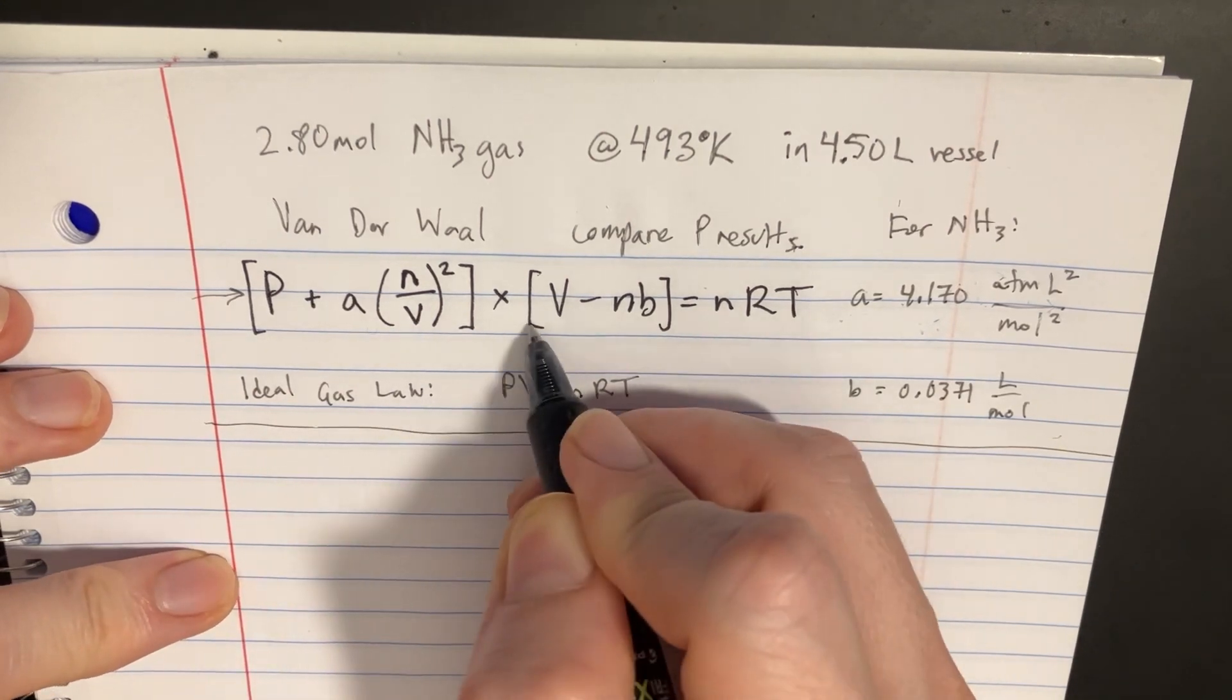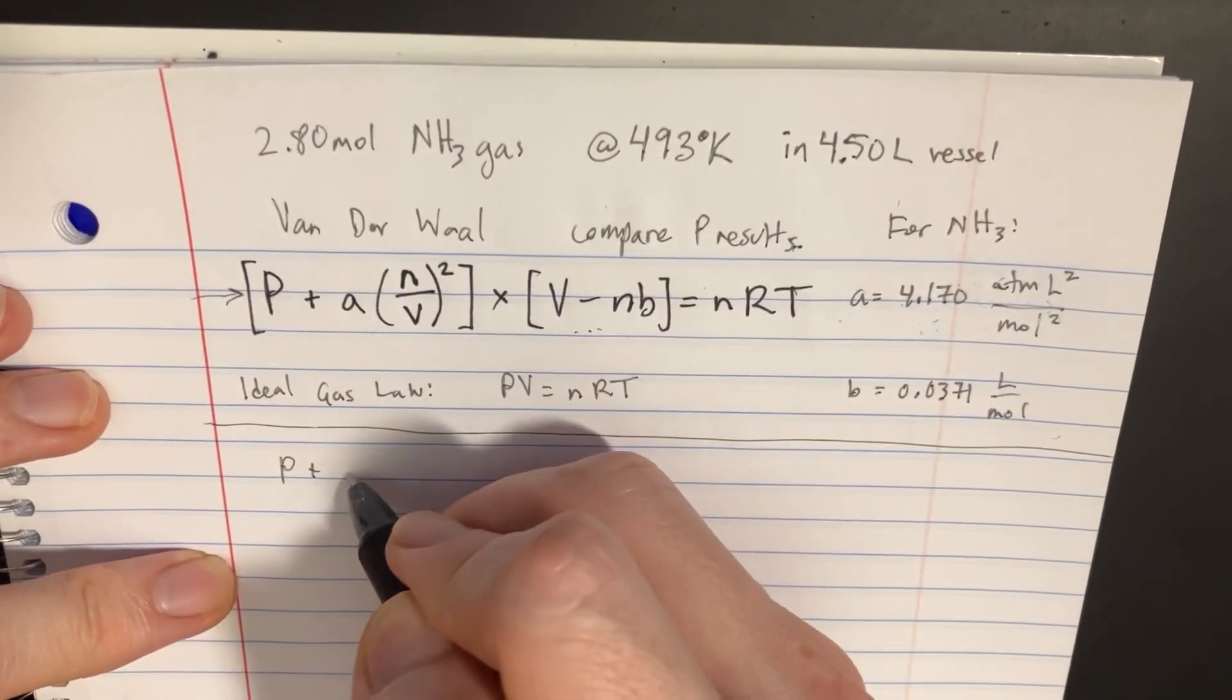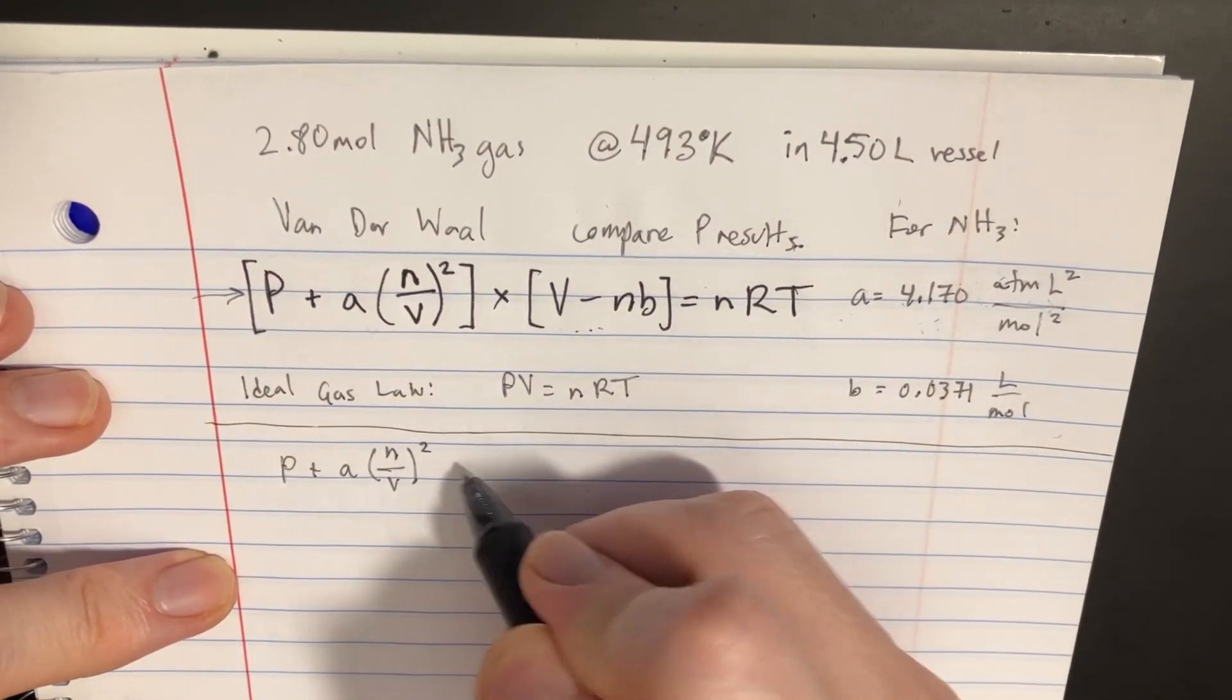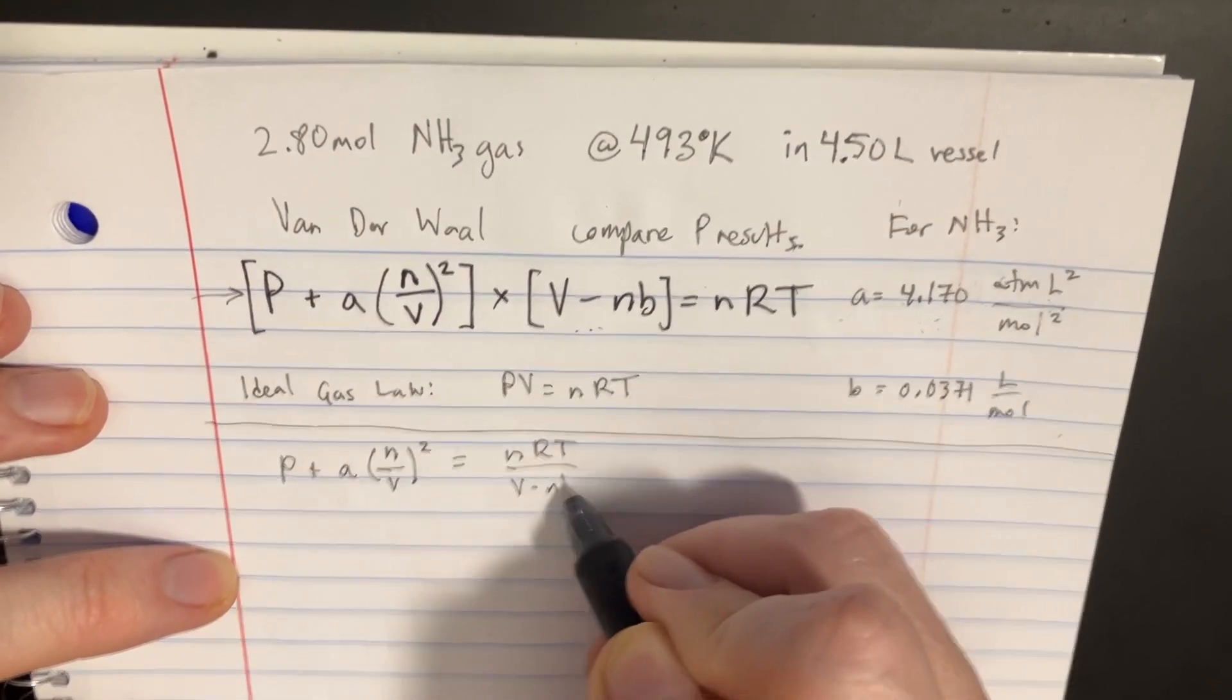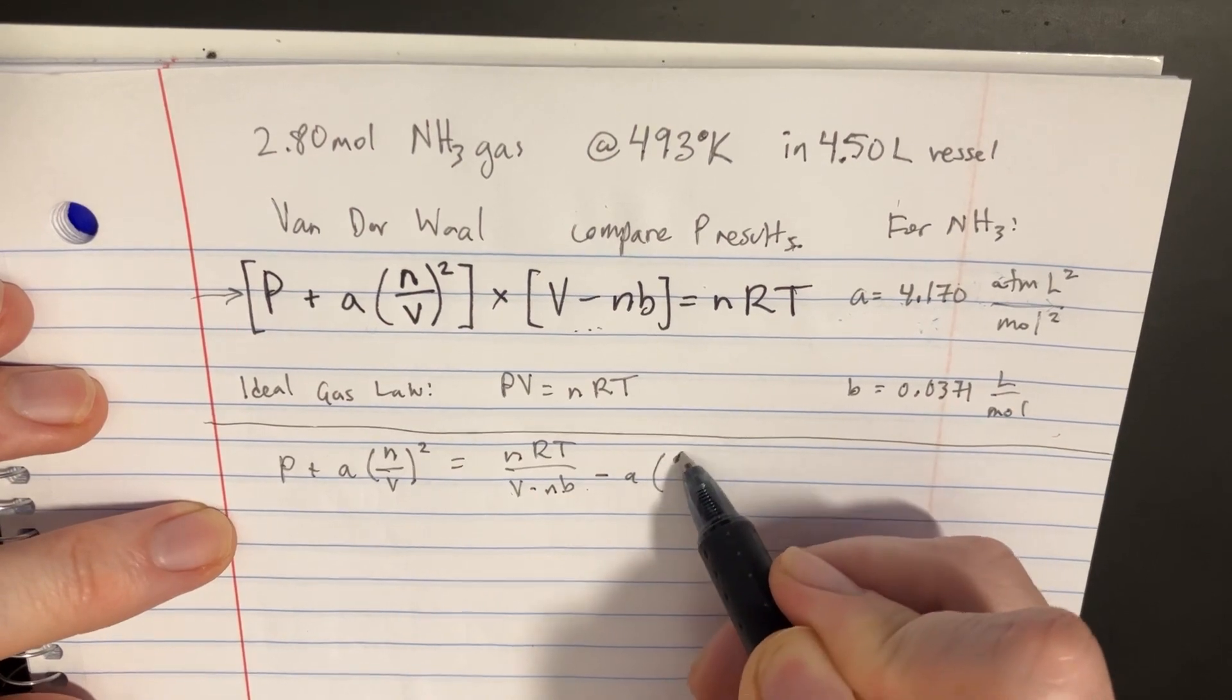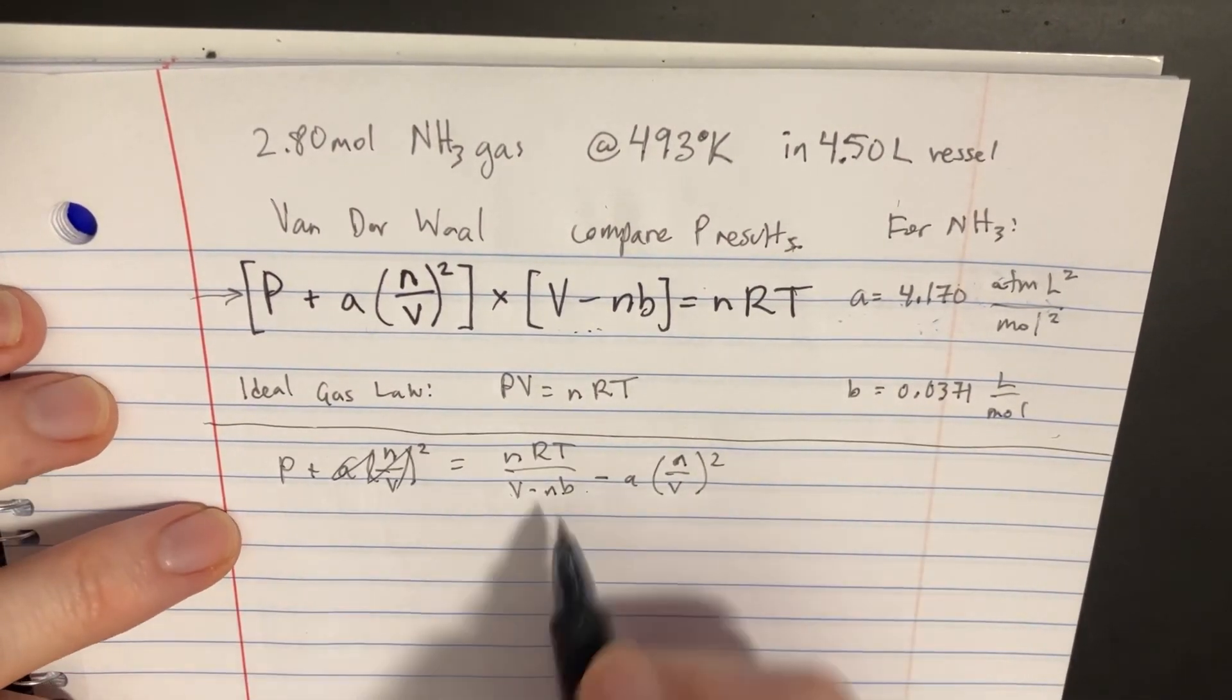We'll just basically have to divide this by that. So we get something like P plus A times n over V squared equals nRT divided by V minus nB. Then we're just going to subtract this A term and now we have the answer for P over here.